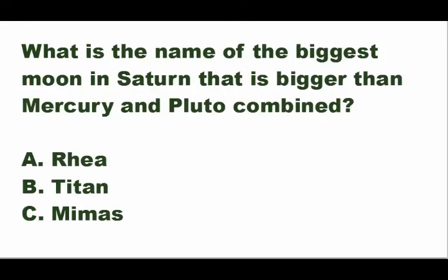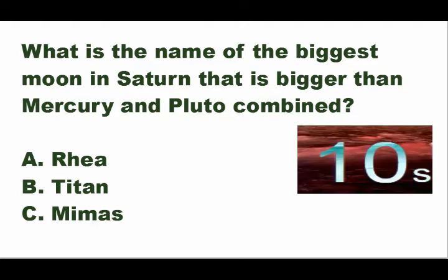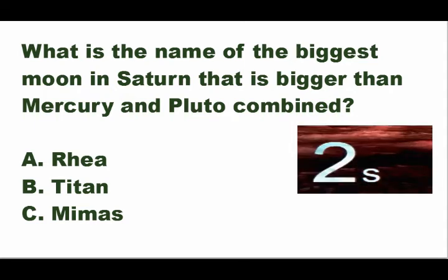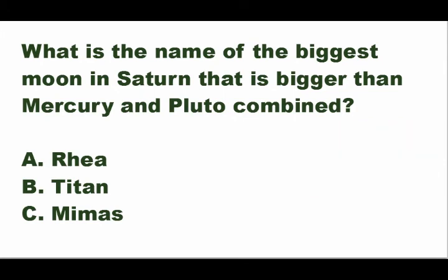Next question: what is the name of the biggest moon of Saturn that is bigger than Mercury and Pluto combined? Is it A — Rhea, B — Titan, or C — Mimas? The answer is letter B — Titan. Titan is the biggest moon of Saturn, bigger than Mercury and Pluto combined — imagine two planets combined!